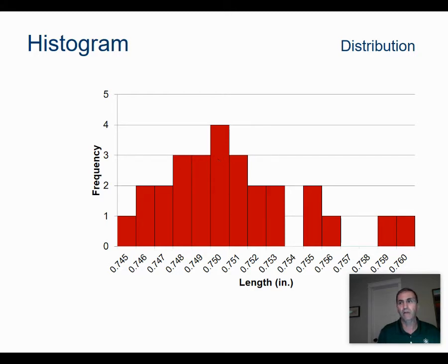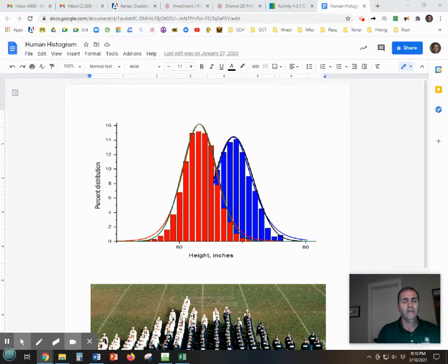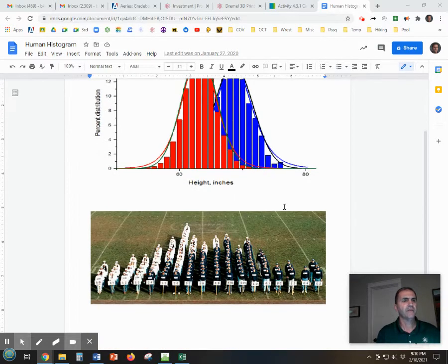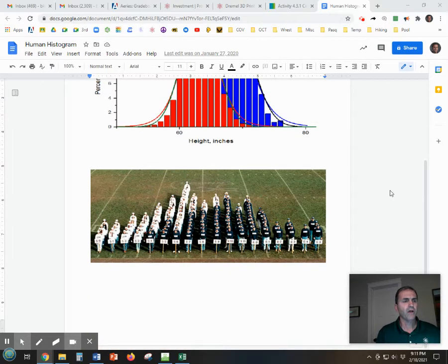Here's an example that we see of height, and of course height has two actual things if you consider that females tend to be less tall than males. There's a college that's been doing this human histogram for years and years—women in white, men in blue—to show there's that kind of peak that shows up.